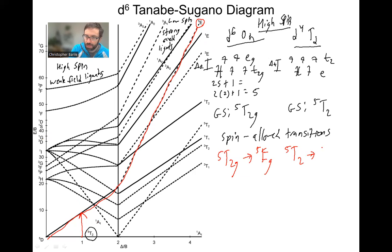For tetrahedral, same sort of thing, but we drop the Gs. This is just going from quintet T2 to the quintet E.